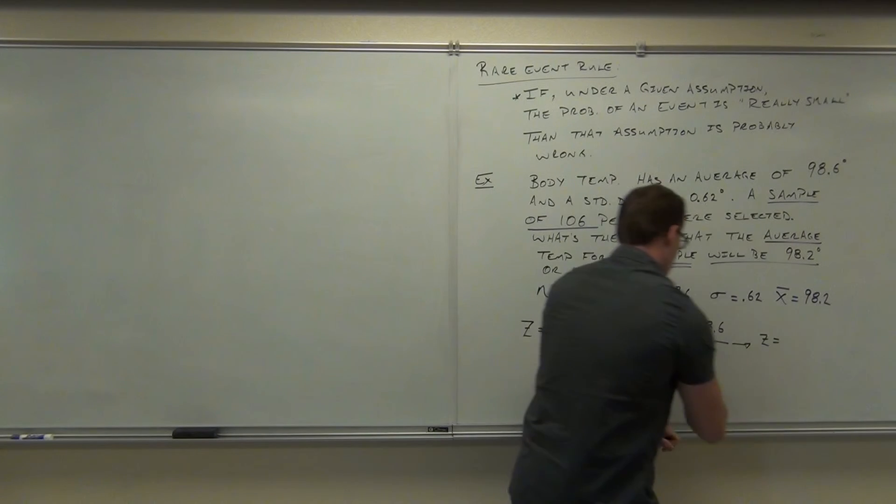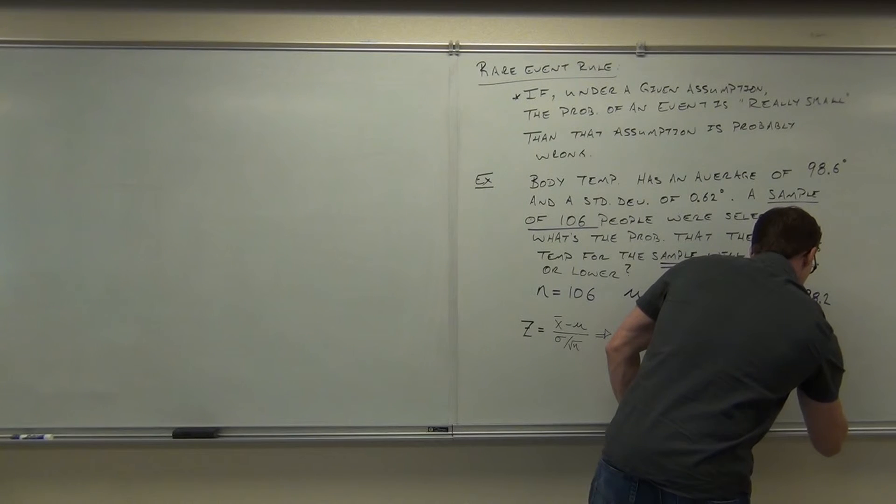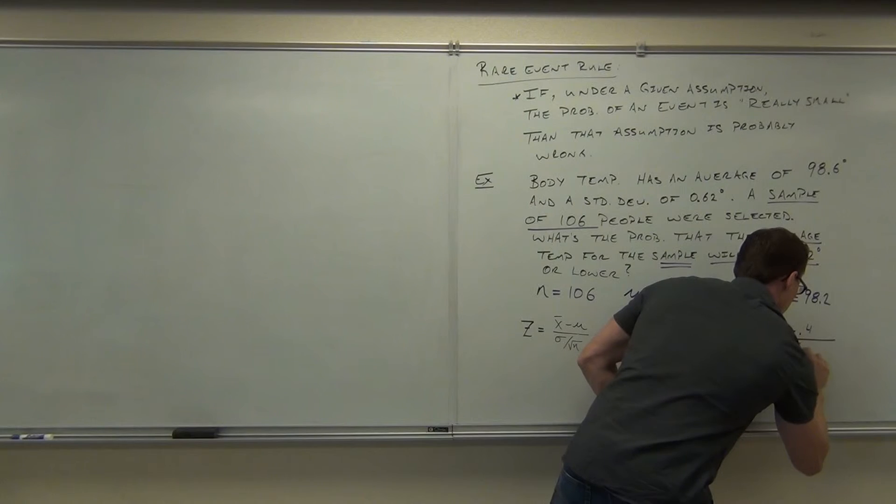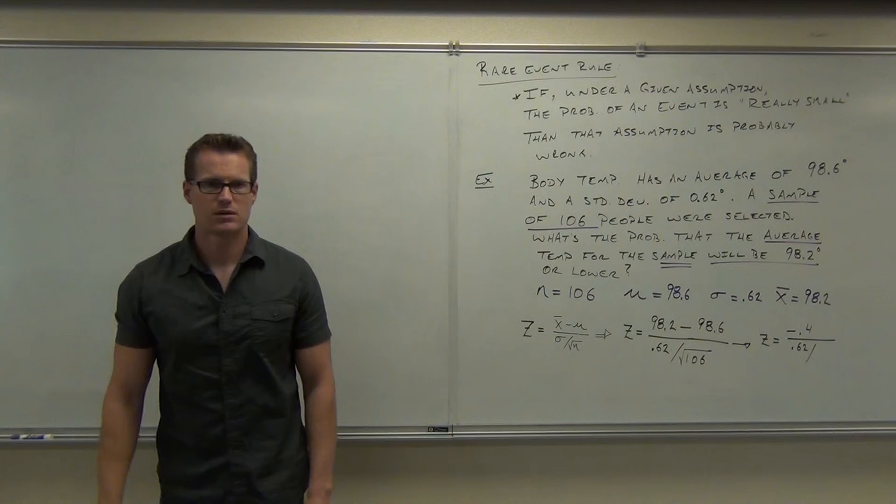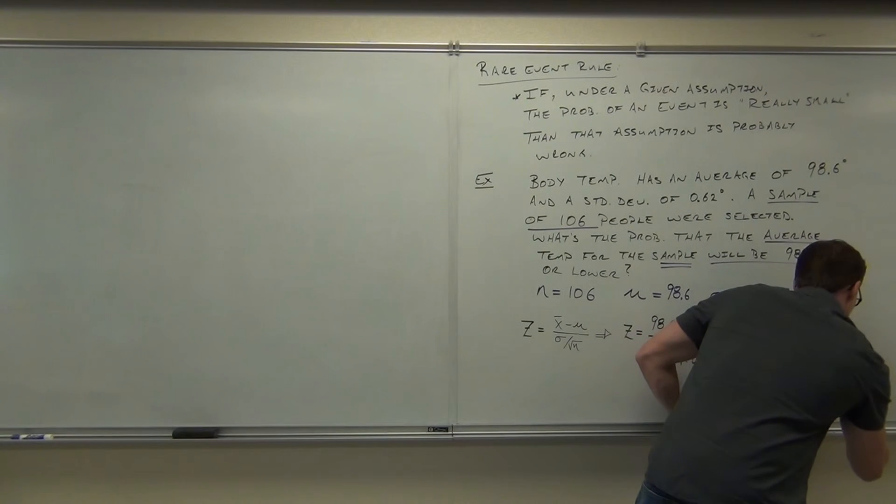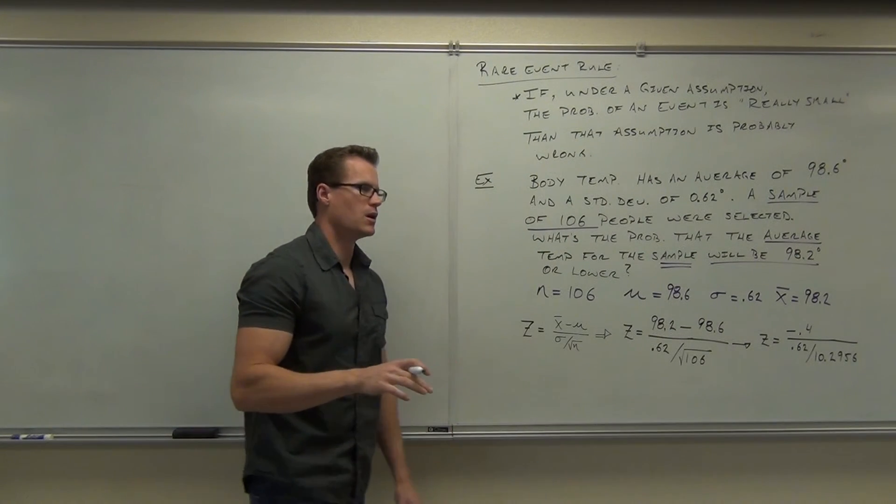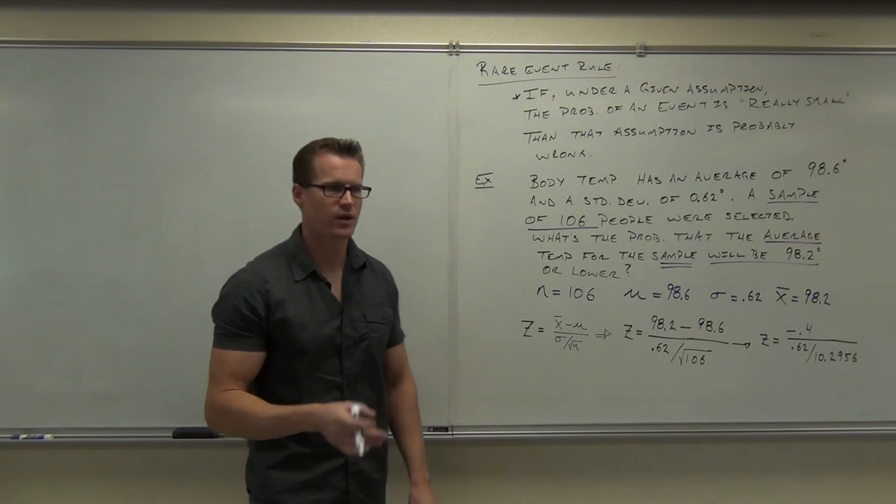So our z-score, we've got, looks like negative 0.4 to me. Over something, 0.62, what's the square root of 106? 10 point... what was it? 10.296. 2, 9, 6. I'm going to put 10.2956. I just want to be sure that I'm not rounding too much. Just better safe than sorry. I don't even want to be off by a little bit.